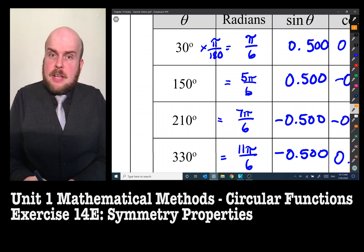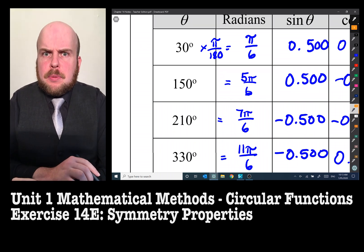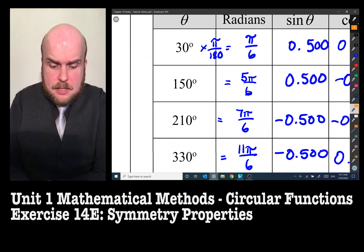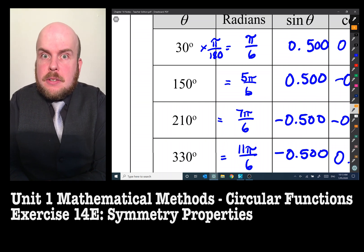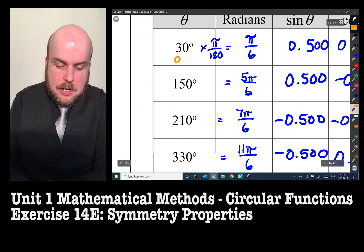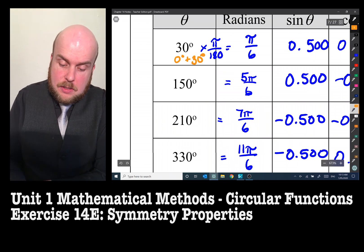They all relate to adding and subtracting from the horizontal angle. What on earth do I mean? Well, 30 degrees I can rewrite as saying 0 degrees plus 30 degrees, or 0 plus π on 6.